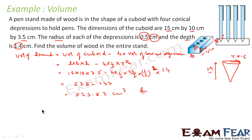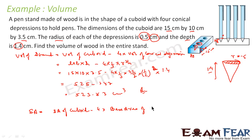Now, if you are asked to find the surface area of the stand, the approach is different. It will be the surface area of the cuboid, minus the base area of the four conical depressions (since those portions become hollow), plus 4 times the curved surface area of each cone — that extra area which is now exposed inside the depressions.